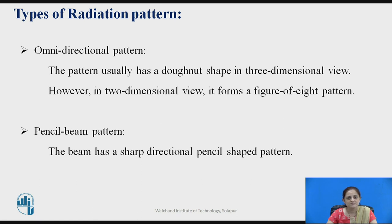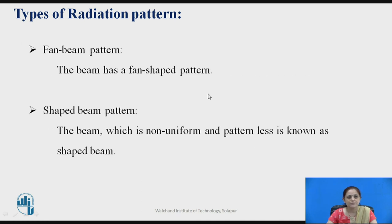The different types of radiation patterns are: omnidirectional pattern, which has a donut shape in 3D and a figure-of-8 pattern in 2D; pencil beam pattern, which has a sharp directional pencil-shaped beam; fan beam pattern, which has a fan-shaped pattern; and shaped beam pattern, where the beam is non-uniform and patternless.